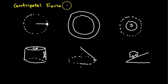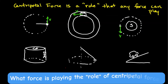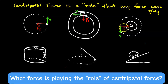Centripetal force is not a separate force — it is a role that any force can play. For a ball on a string swung overhead (top-down view), tension plays the role of centripetal force, always pointing toward the center. For a car going in a circle, static friction provides the centripetal force. For a planet orbiting the sun, gravitational force plays this role. In a barrel ride at an amusement park, the normal force from the wall on the person acts as the centripetal force.